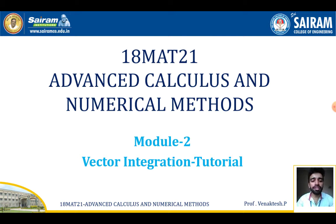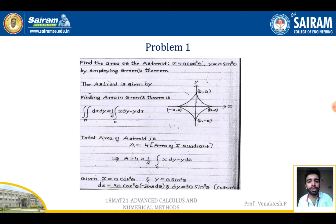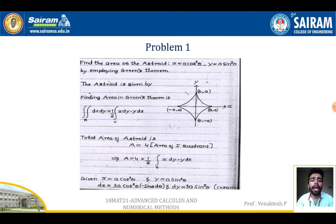The first example: find the area of the asteroid using Green's theorem. The asteroid is given by x = a·cos³θ, y = a·sin³θ. The figure for the asteroid is shown, and the formula for the asteroid is x^(2/3) + y^(2/3) = a^(2/3).